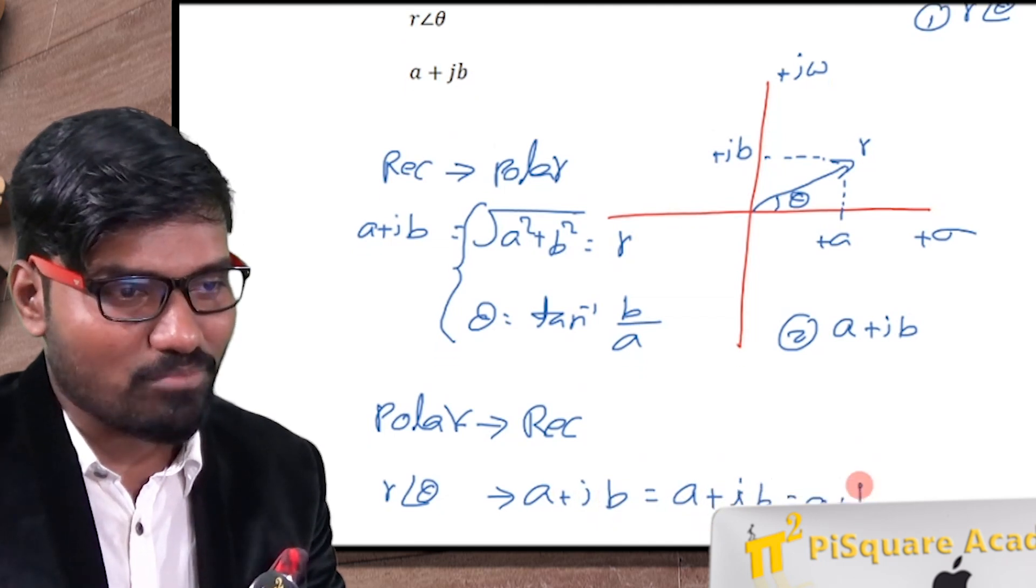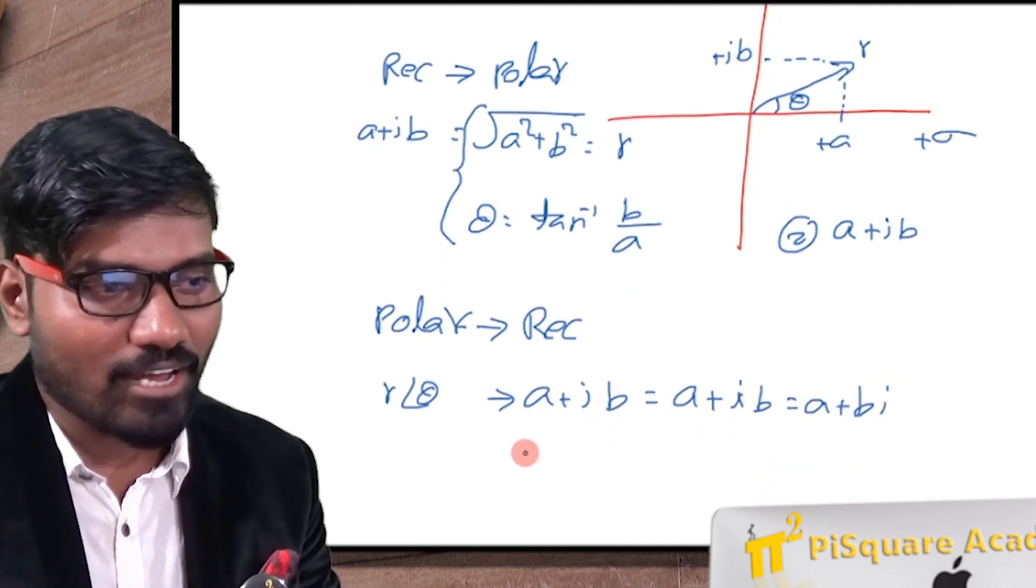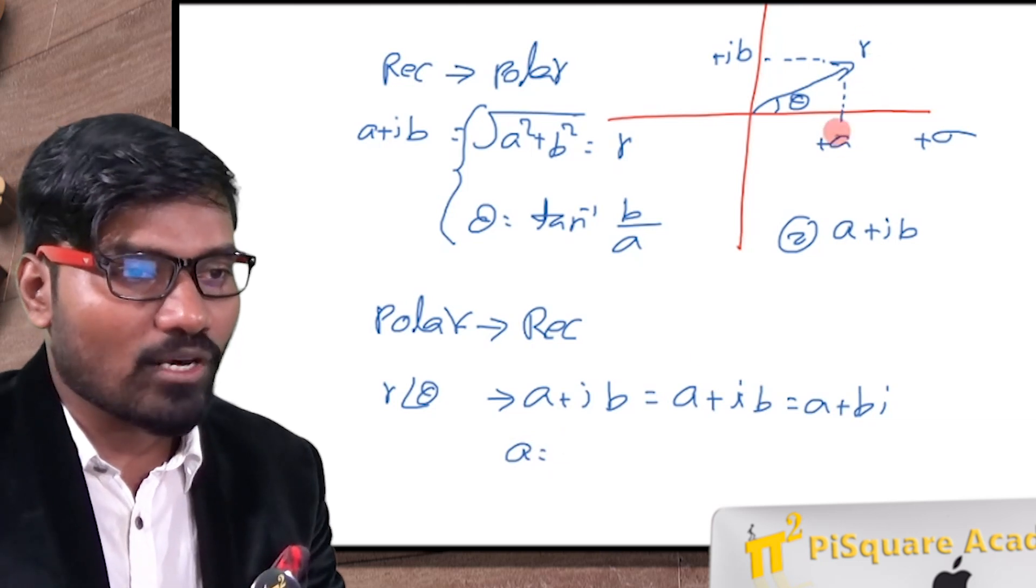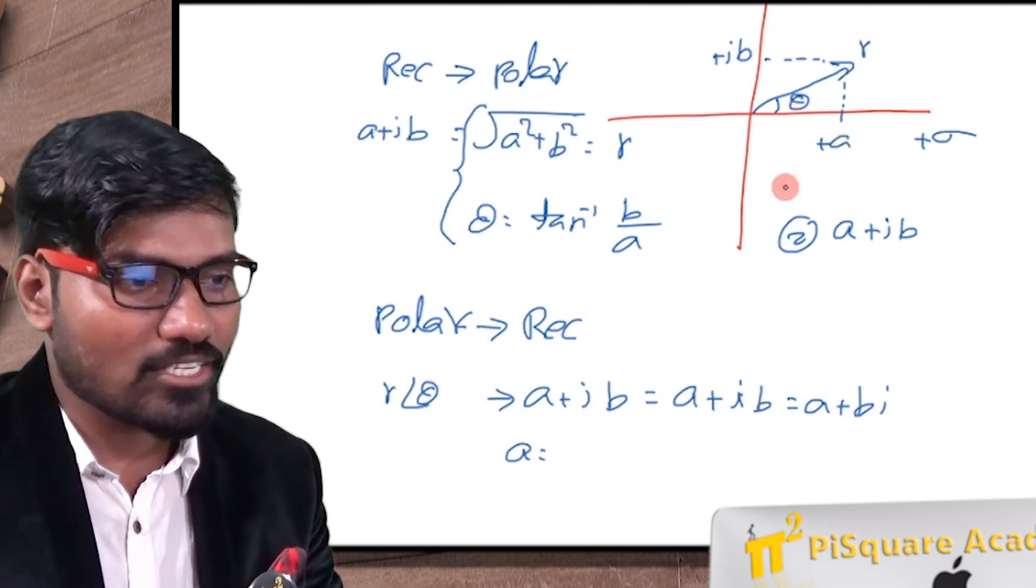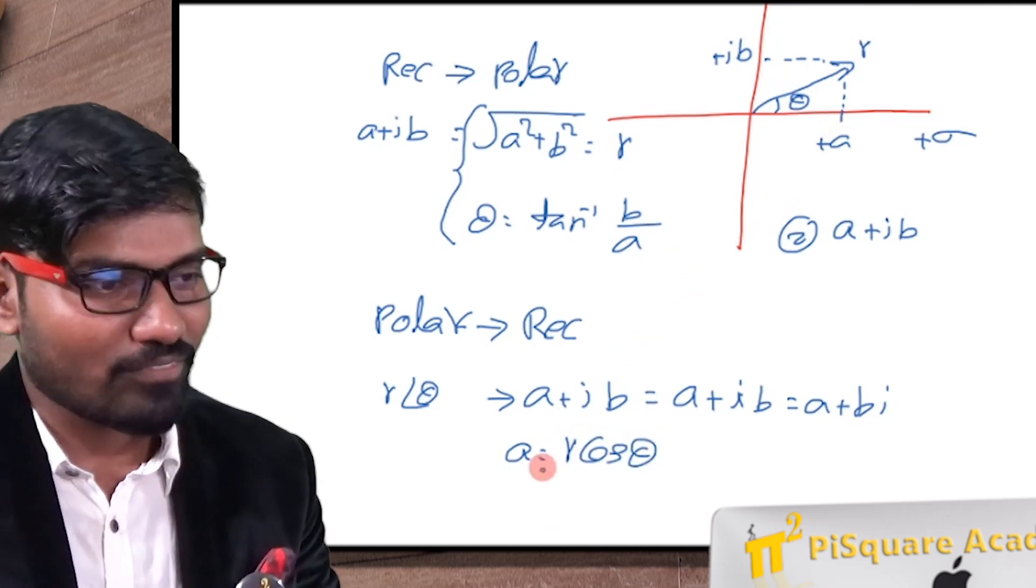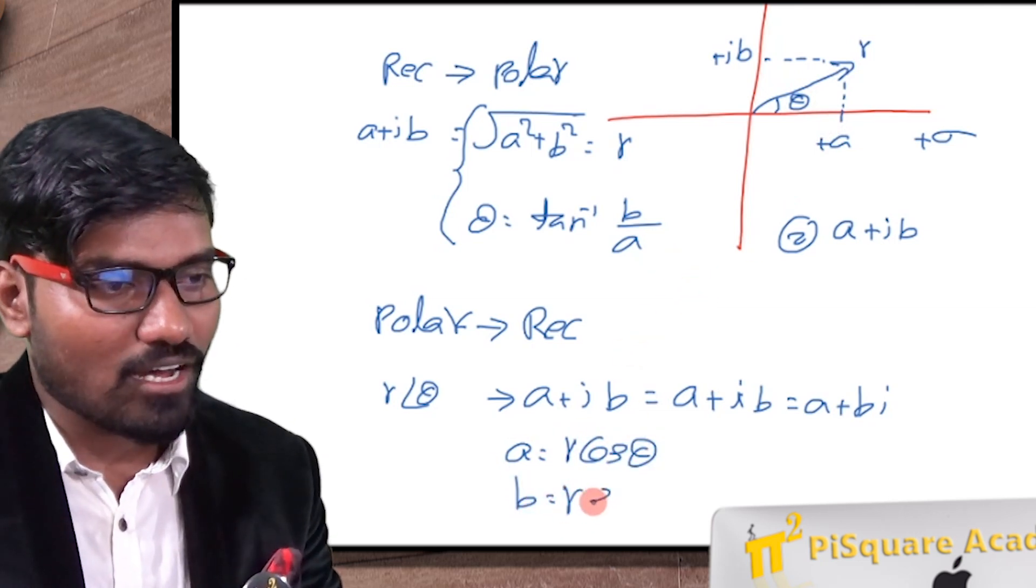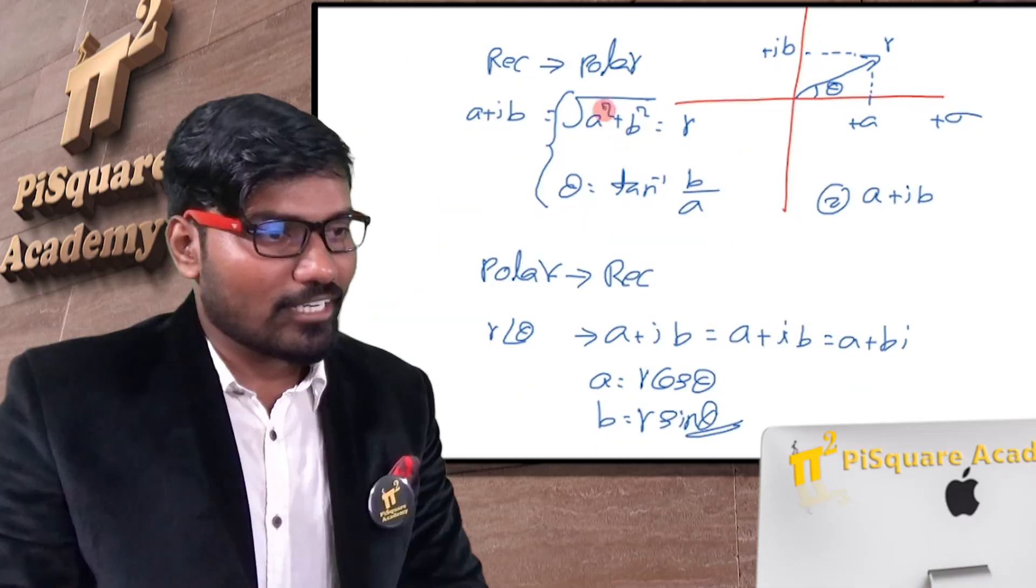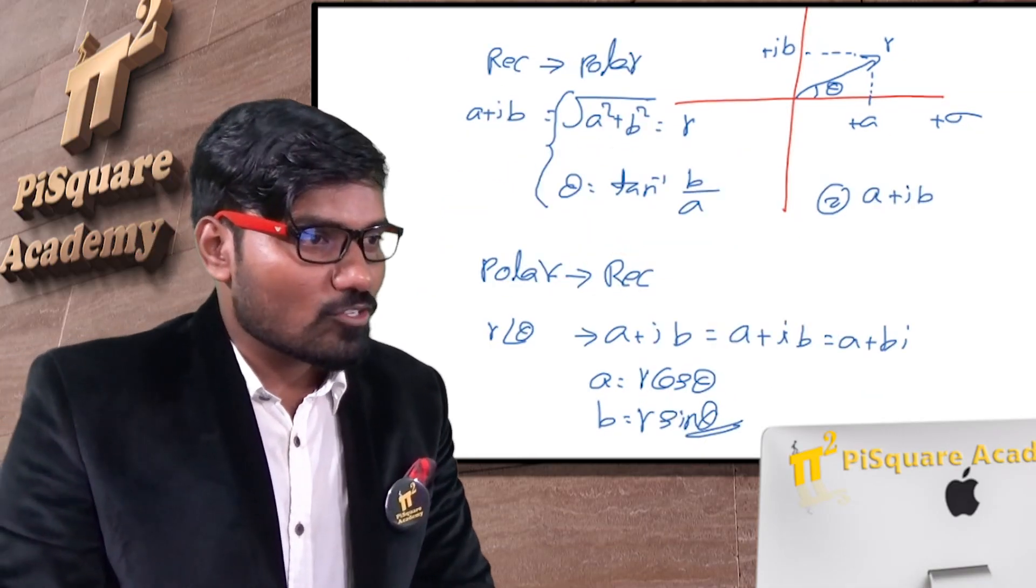Or a plus bi, all same. A value is, from this, tell me what is the value of a? r is known, theta is known, simply a is equal to r cos theta, simple trigonometry. And b value is equal to r sine theta, that's it. Let's use these two formulae for conversion.